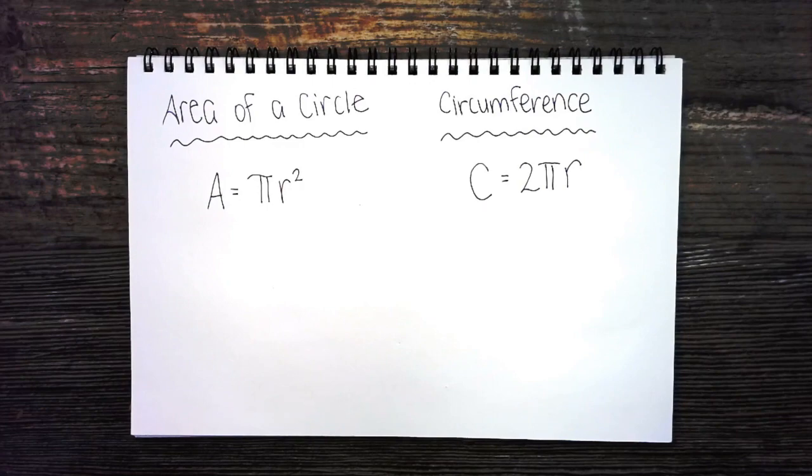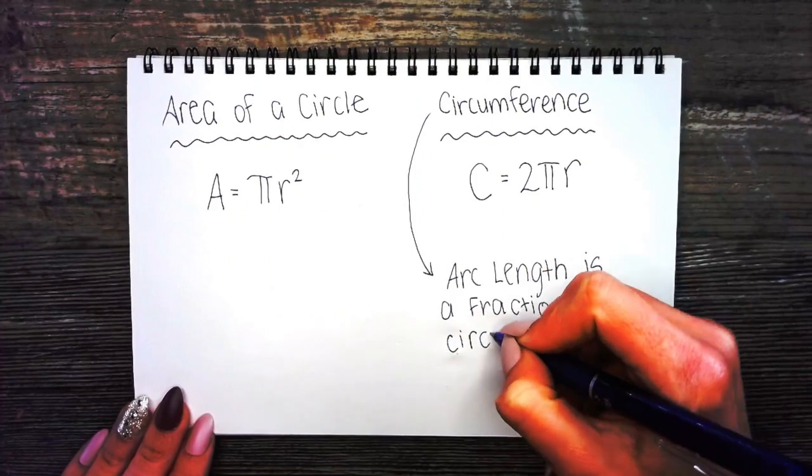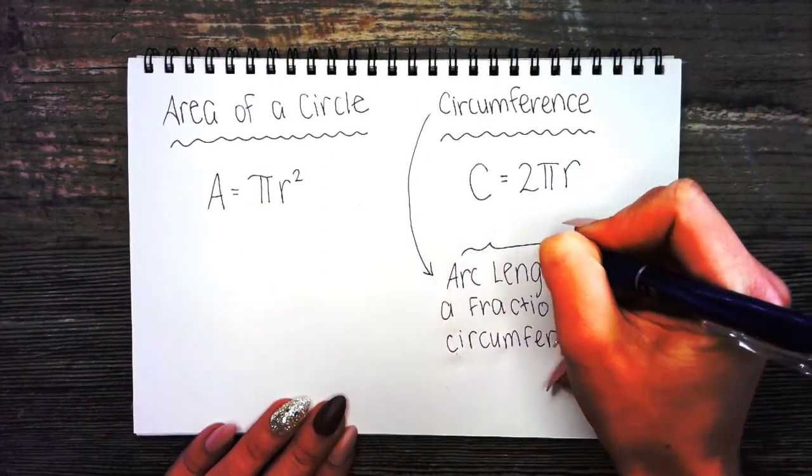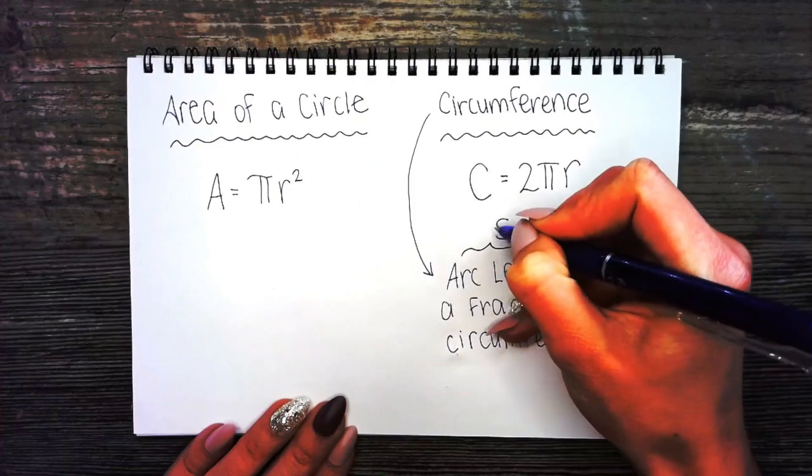Why am I bringing these up? We just talked about arc length. Arc length is a fraction of circumference. We're going to use s to represent arc length.